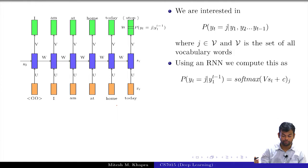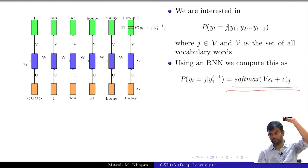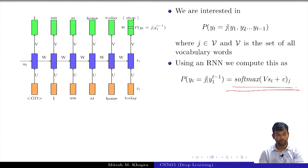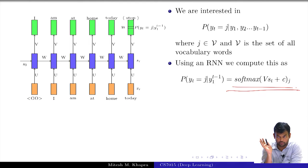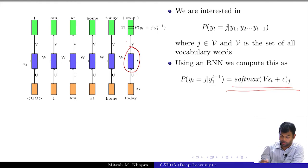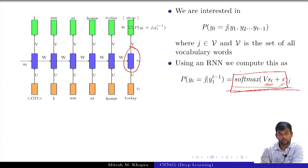Using an RNN, at the output layer we apply softmax — softmax means probability distribution. It takes as input the state at every time step, applies a linear transformation plus a bias. The resulting vector is of size V — the vocabulary size — and the j-th element of that vector is the probability of the j-th word.